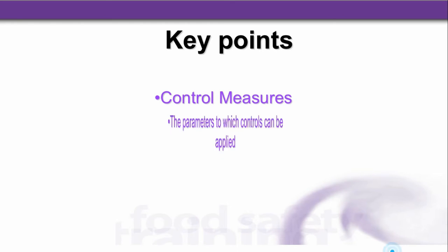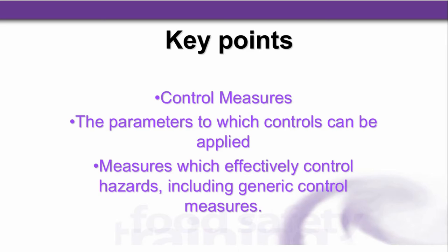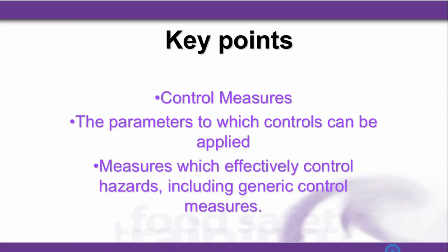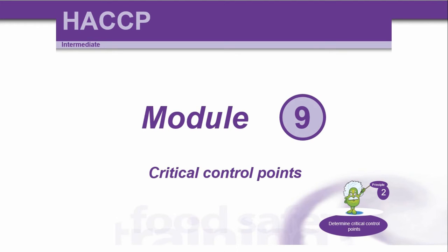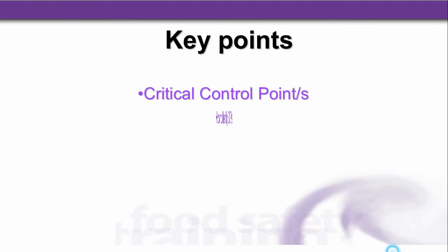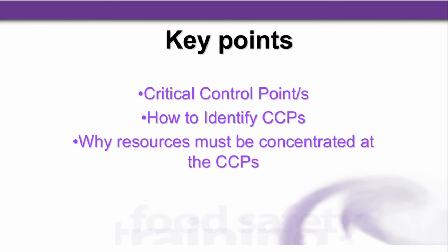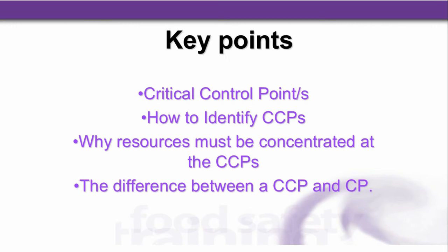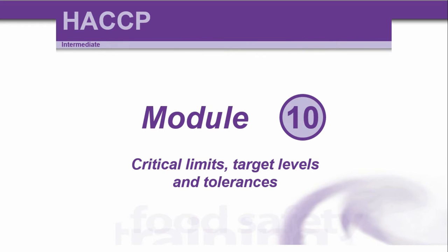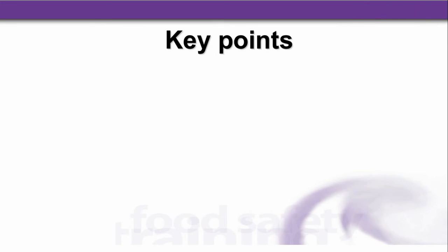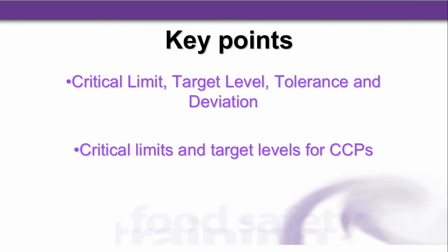Module eight covered control measures. Key points included control measures, the parameters to which controls can be applied, and measures which effectively control hazards, including generic control measures. Then we looked at module nine, critical control points — Principle 2 of HACCP. Key points included how to identify CCPs, why resources must be concentrated at the CCPs, and the difference between a critical control point and a control point, which is a good hygiene practice. Module ten covered critical limits, target levels and tolerances, with key points including critical limit, target level, tolerance and deviation, critical limits and target levels for CCPs, and examples of critical limits and target levels.